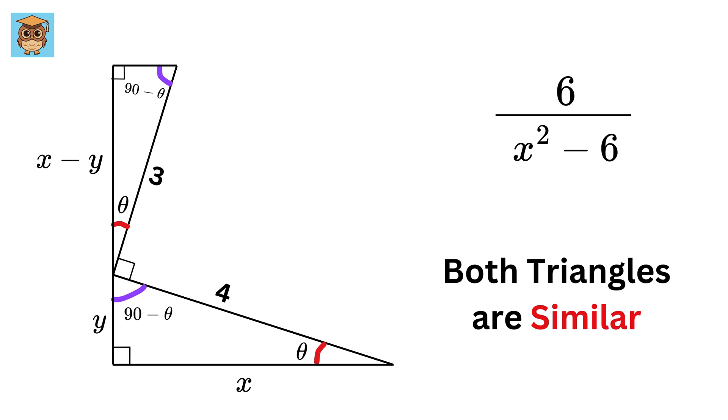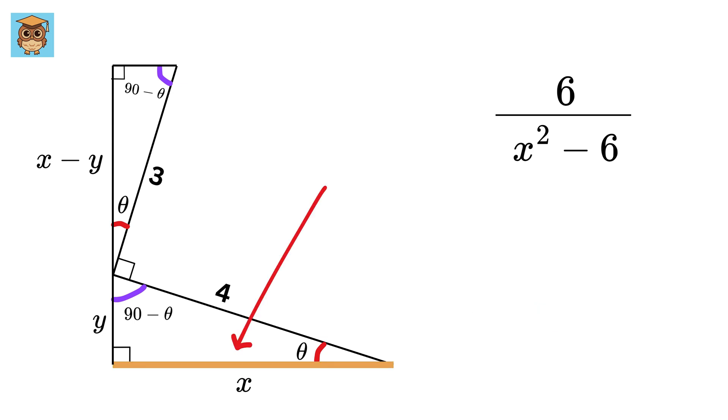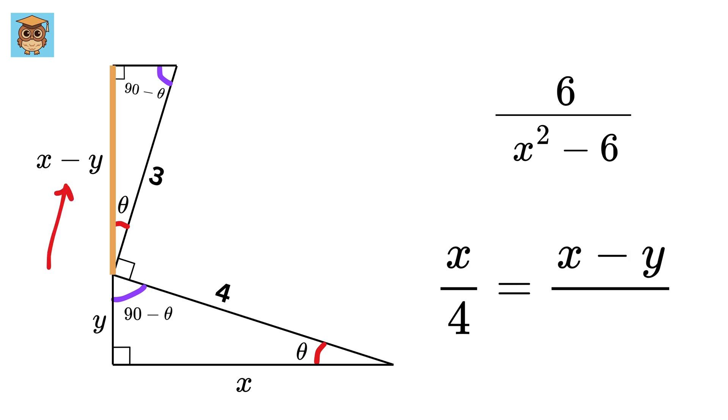Since both these triangles are similar, therefore, this length, which is opposite to the angle 90 minus theta, or X, over this hypotenuse, or four, will be equal to the following ratio. And the ratio is this side, which is opposite to 90 minus theta, or X minus Y, over this hypotenuse, or 3.